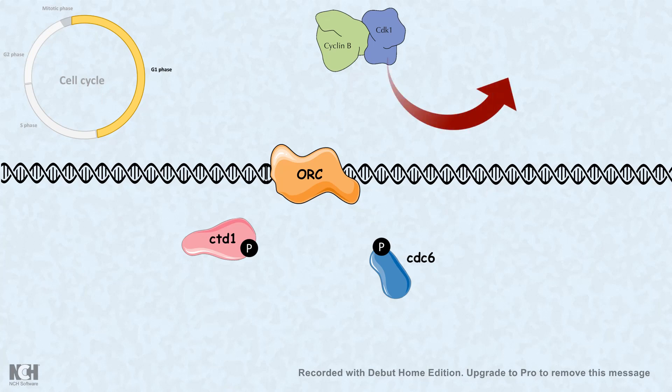But what happens is, at early G1 phase, this maturation-promoting factor is degraded by ubiquitin-mediated proteasome lysis. Then what happens, several phosphatase enzymes can come and dephosphorylate these triggering factors.